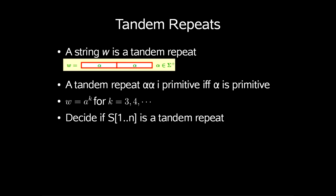We define tandem repeats as follows. A string w is a tandem repeat if a pattern is repeated and the repetitions are directly adjacent to each other. We also define a tandem repeat as primitive if and only if alpha is primitive, which I will get into in a little while.